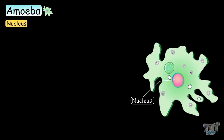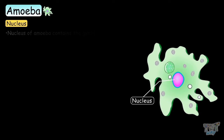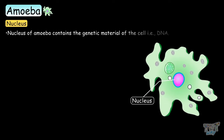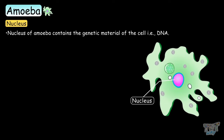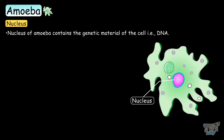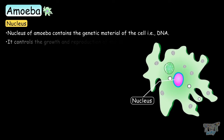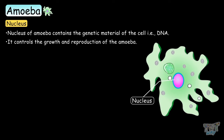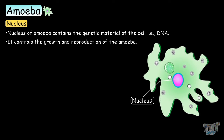The nucleus of the amoeba contains the genetic material of the cell — that is, the DNA. This controls the growth and reproduction of the amoeba.